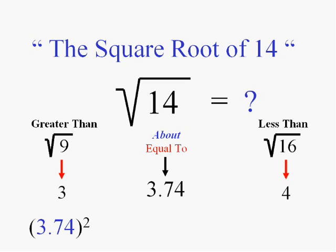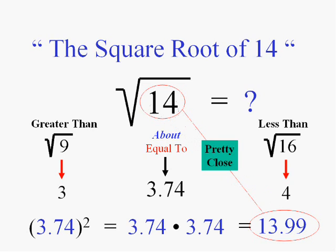It's not exactly 3.74. If you take 3.74 and multiply it by itself, you get 13.99. These non-exact square roots — we're never going to find the exact answer for them. We can just approximate them. We're going to call them irrational numbers. They're irrational; I can never really write them down. The non-exact square roots — but you should be able to estimate them.